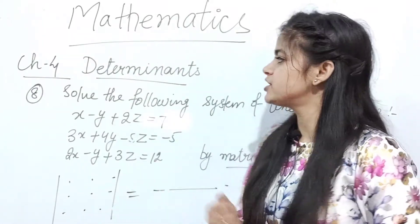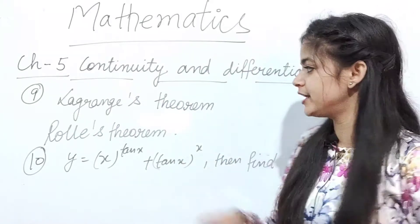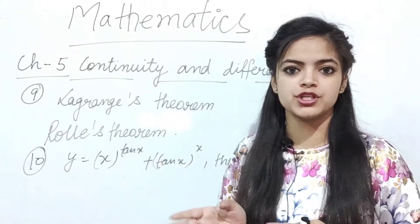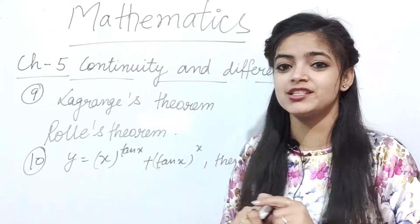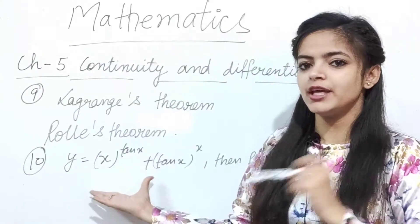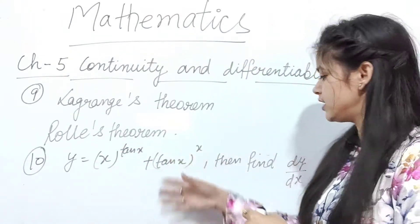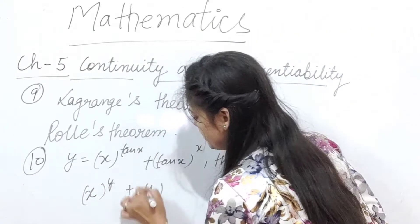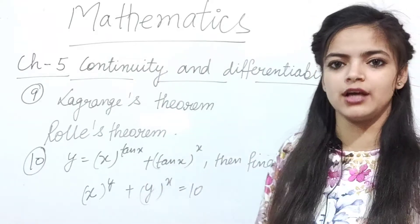The properties of determinants question can come for 3-4 marks or 6 marks. Now move on to chapter number 5, Continuity and Differentiability. The important questions here are Lagrange's theorem and Rolle's theorem — verify the theorem for any function within some limit. These two theorems are questions you should not leave. Another frequently repeated question is: x raised to the power y and y raised to the power x equals 10 — find dy/dx.